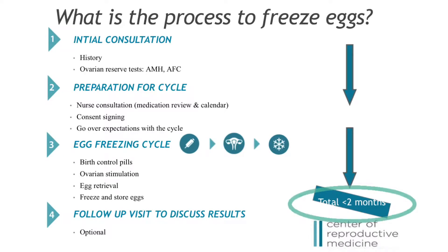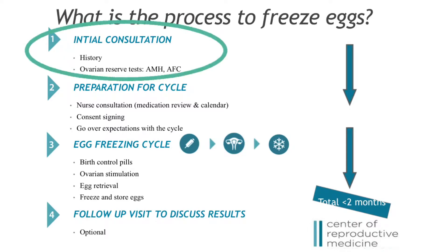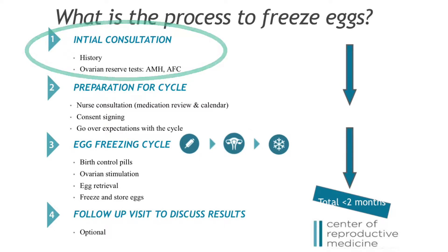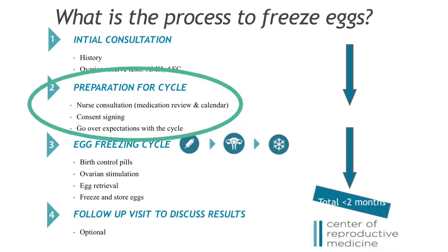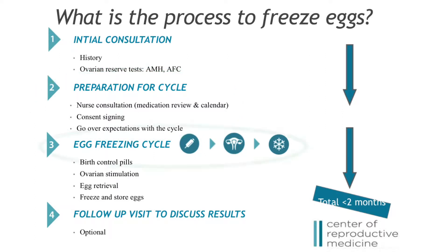The process of egg freezing usually takes about two months to complete and involves four steps. At the initial consult, we'll do a history and physical exam and assess your ovarian function with a blood test called an AMH and an ultrasound to look at the ovaries — in particular to look at the follicle count — which will tell us about ovarian reserve. In preparation for the cycle, you'll meet with a nurse to review medications and create a calendar. You'll also sign consents with your physician and go over expectations based on the data we have, primarily age, AMH, and antral follicle count.